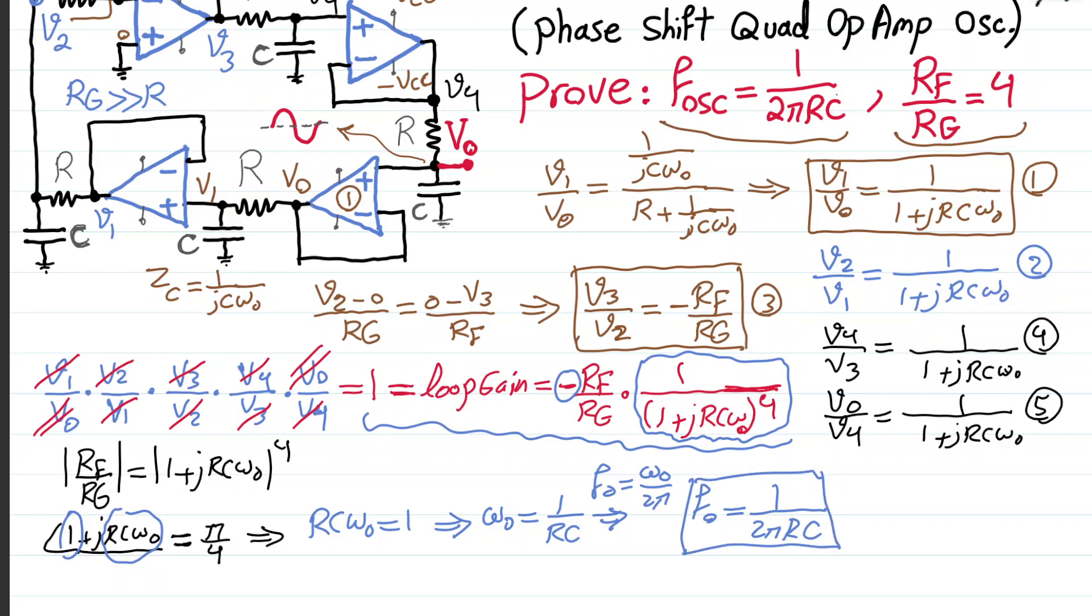Now, the nice thing is we just said RCω naught at the frequency of oscillation should be 1. So, this thing, therefore, because of what we just found, should be equal to 1 plus j to the power of 4 and absolute value of 1 plus j to the power of 4. That means √2. That means √2 to the power of 4, which means 4.